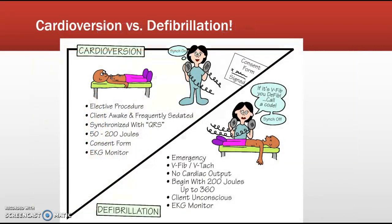It's important to know the differences between cardioversion and defibrillation. With cardioversion, the patient has a pulse and a blood pressure. The principle is applying a shock timed to the R wave to allow the heart's electrical system to reset. Cardioversion is generally an elective procedure — the client is almost always sedated, not truly awake. It is synchronized, so you must make sure the sync button on the defibrillator is pushed. Generally it uses a lower energy level of 50 to 200 joules, and the patient would have signed a consent form.